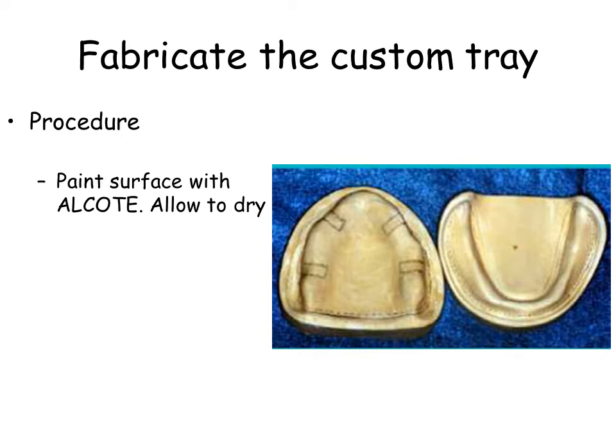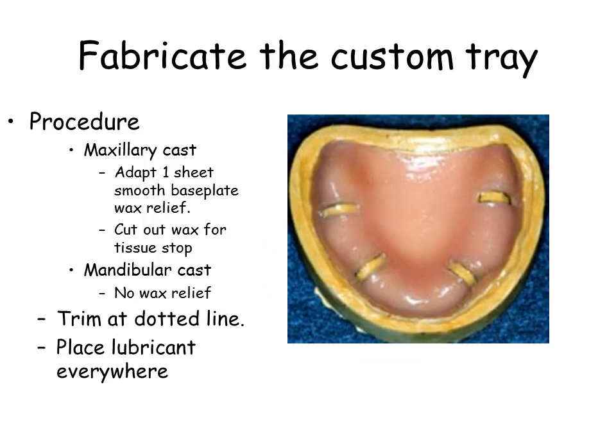Draw four lines on the violin drawing. Paint the surface with aldcote or other separating medium and allow to dry. Trim the wax along the dotted line. Place Vaseline all over the surface of the cast and wax.